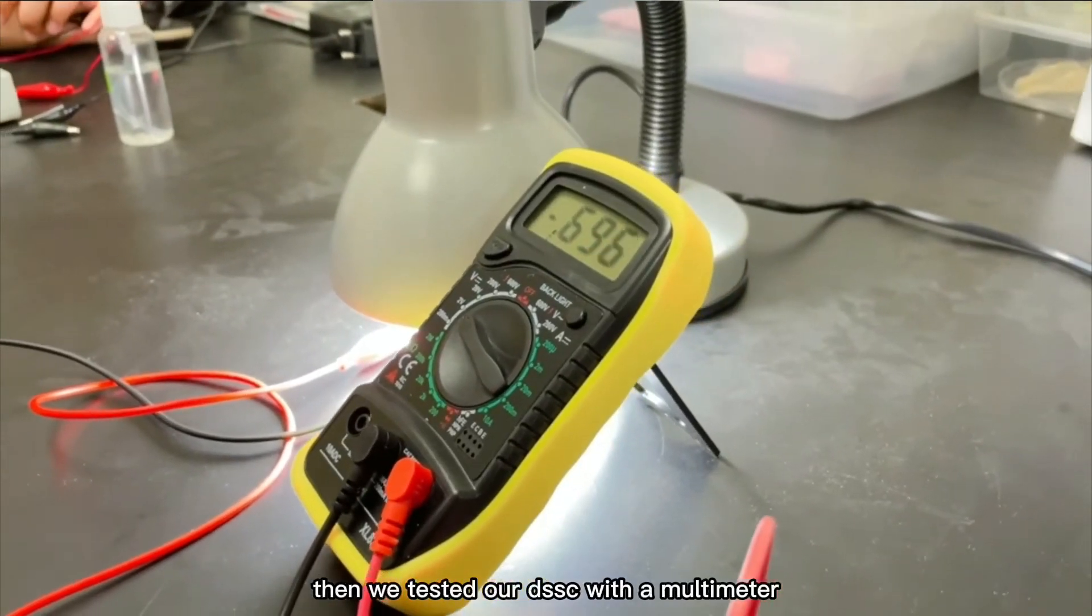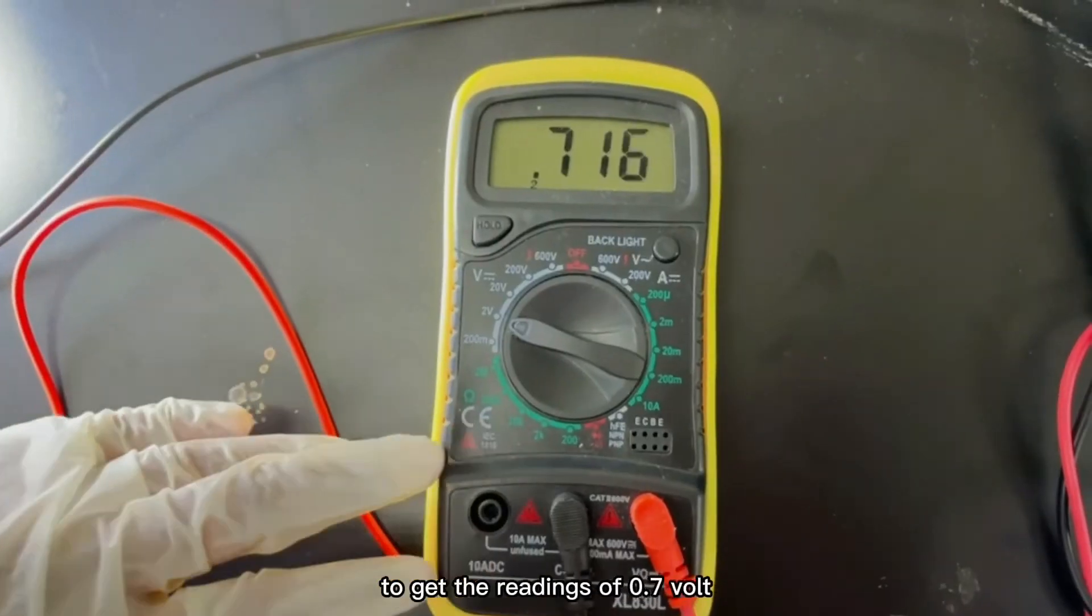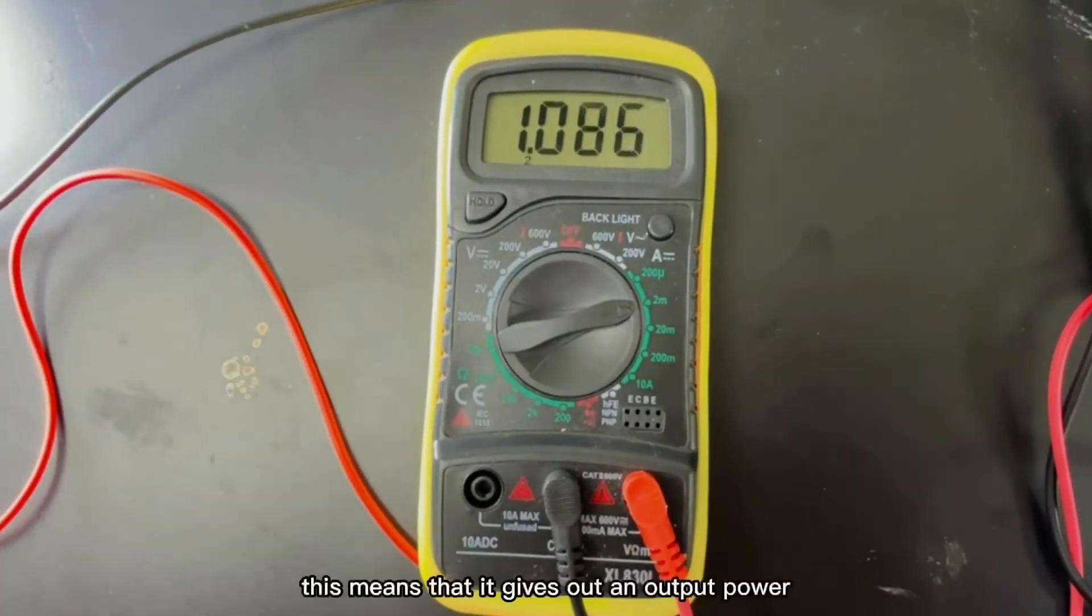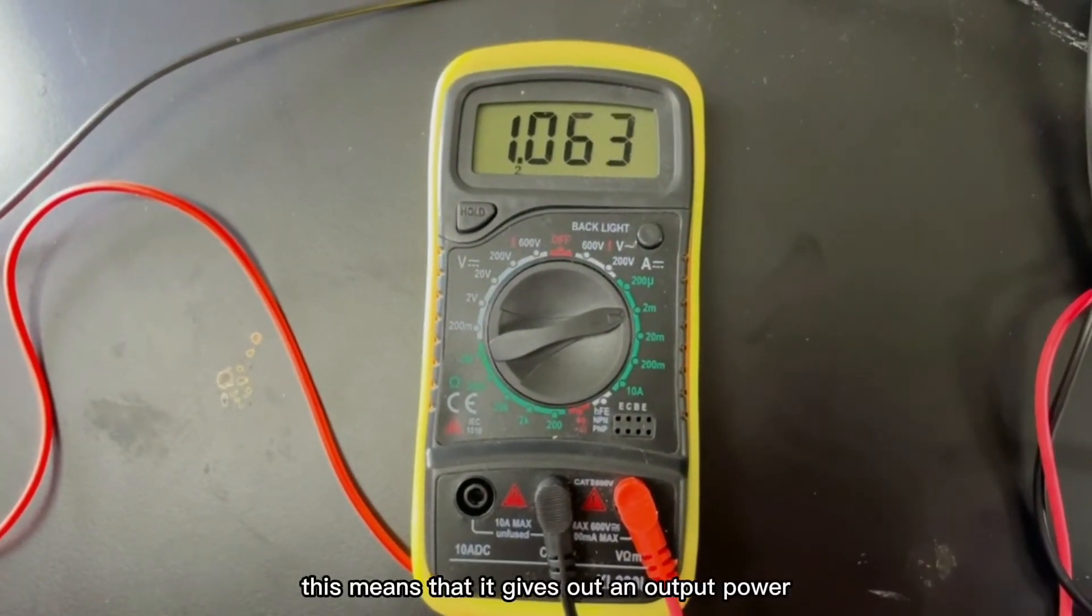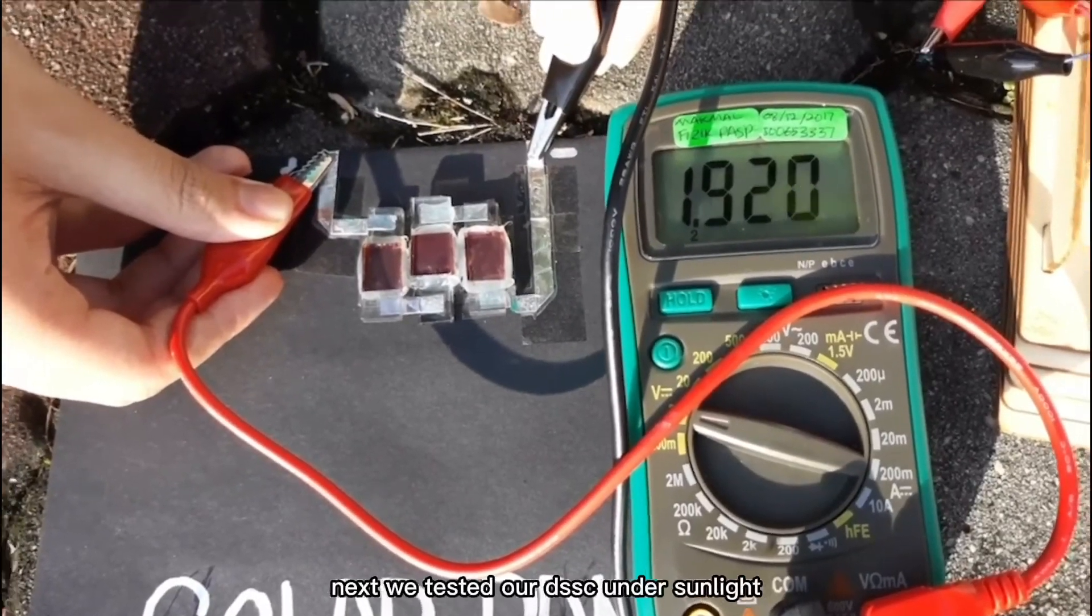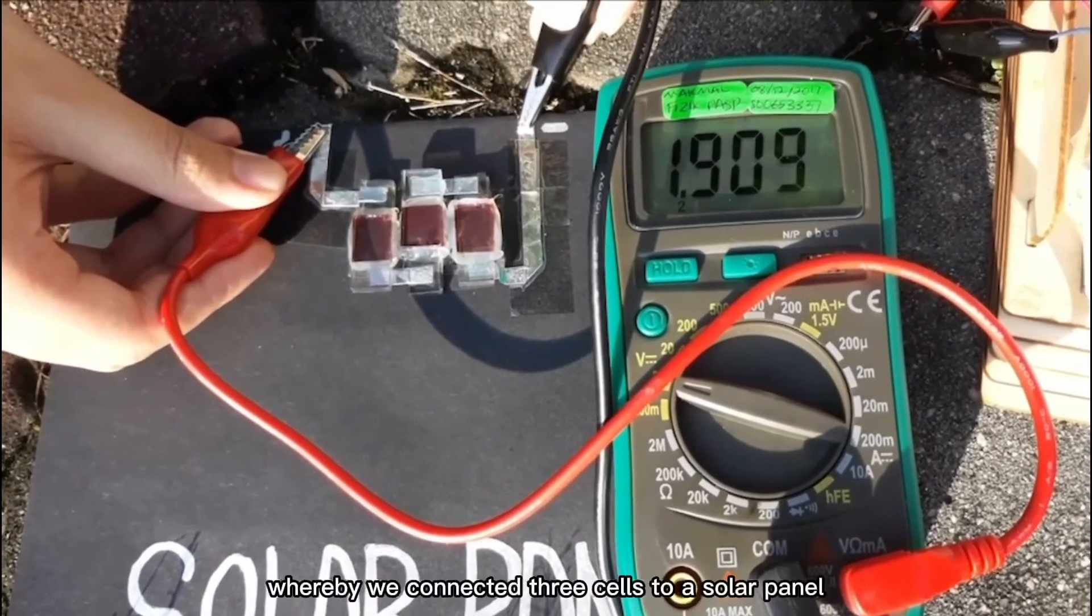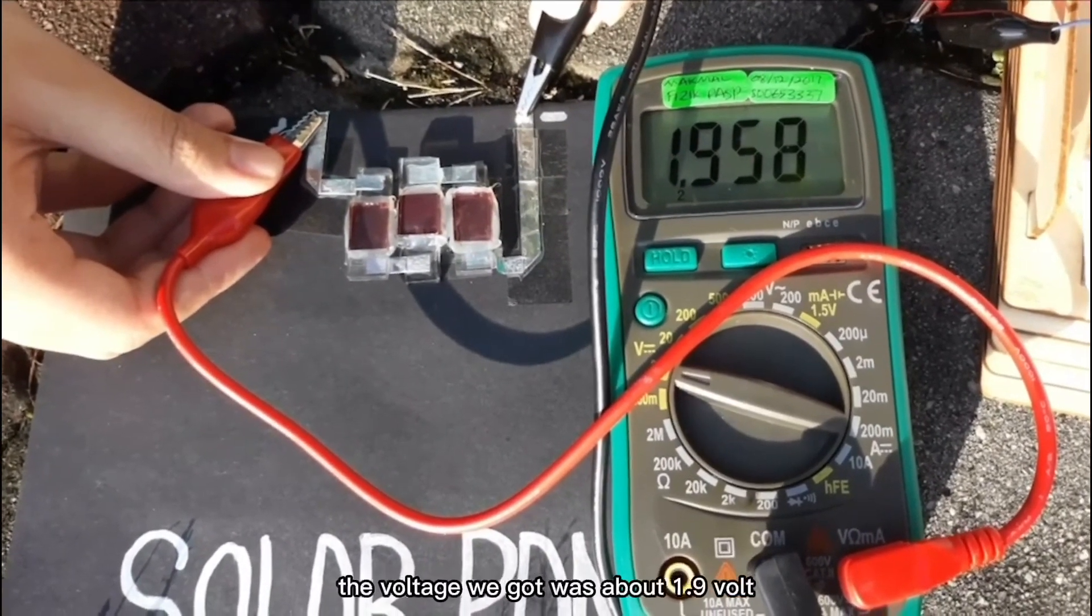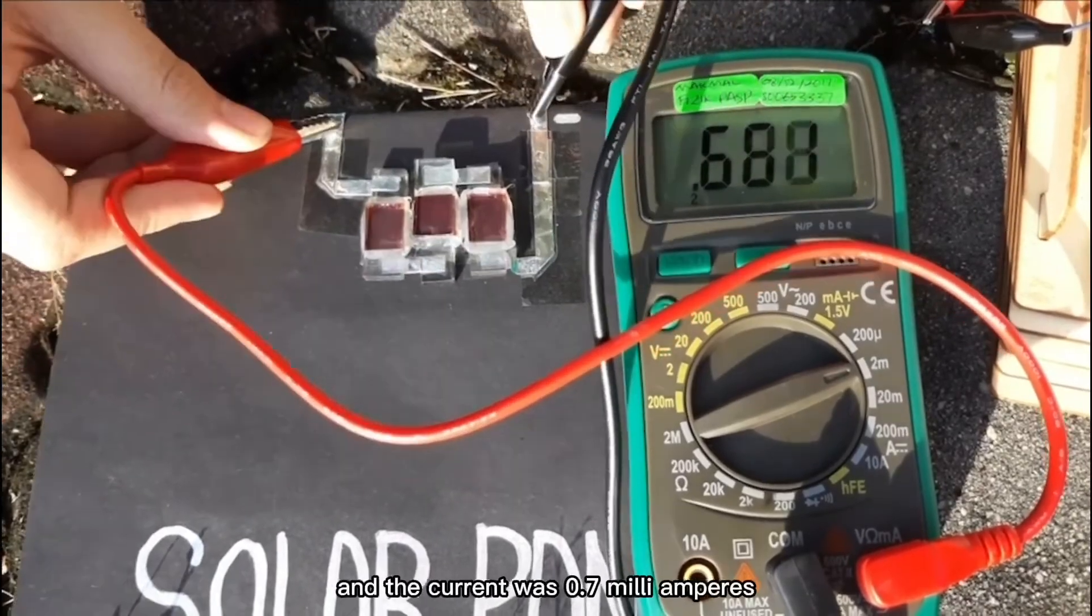Then, we tested our DSSC with a multimeter to get the readings of 0.7 volts and 1.0 milliampere. This means that it gives out an output power of 0.7 milliwatts. Next, we tested our DSSC under sunlight whereby we connected 3 cells to a solar panel. The voltage we got was about 1.9 volts and the current was 0.7 milliampere.